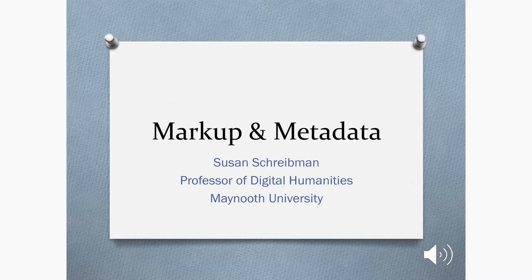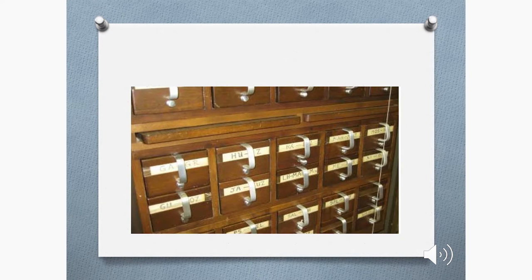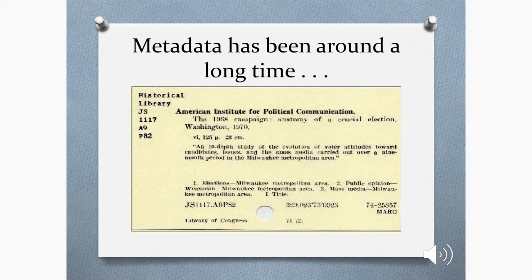Metadata is structured information. It describes, explains, locates, or makes it easier to retrieve or manage any kind of resource, be it analog or digital. Metadata is often called data about data or information about information. Metadata has been around a long time. For those of you who remember the old-fashioned card catalogs, books or other resources were cataloged under the title or the author, and this provided a surrogate for the object itself.